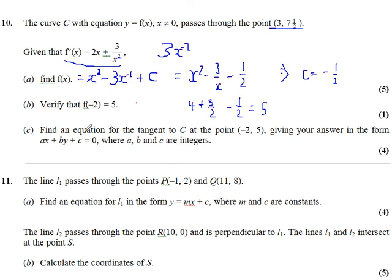Now part c, find the equation of the tangent to c at the point minus 2, 5, giving your answer in the form where a, b, and c are integers. I might as well just do that, although it's now nothing to do with this. It's now finding the equation of a straight line. So the equation of the tangent at this point, we know the gradient here. That's the gradient.